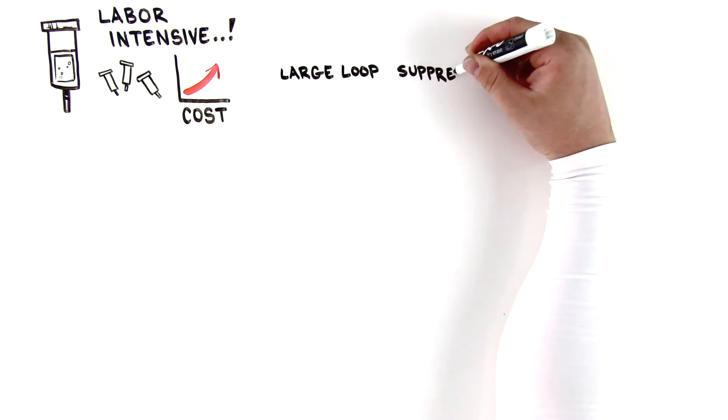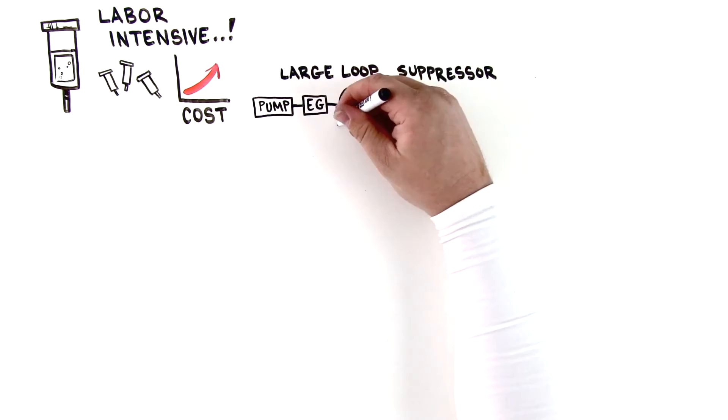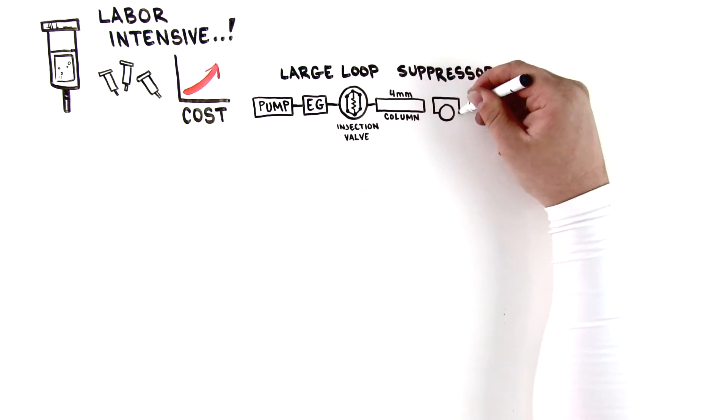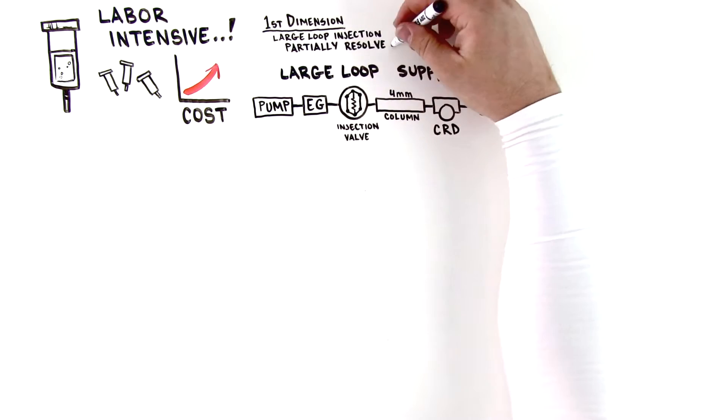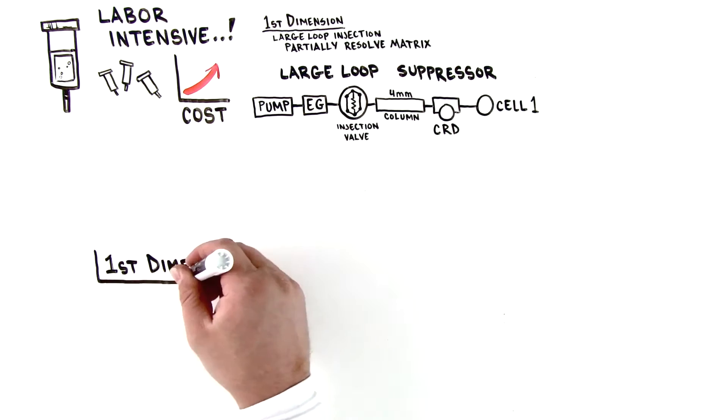2DIC allows direct injection of water samples and is ultra-sensitive because it only focuses on time segments in the chromatogram that correspond to the target analyte, and not the interfering ions. 2DIC has several advantages.